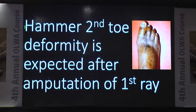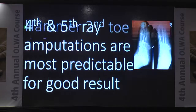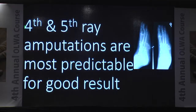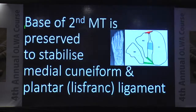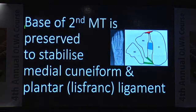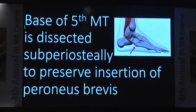Hammer second toe deformity is expected after amputation of the first toe. Fourth and fifth ray amputations are more predictable for good results. The base of the first and second metatarsal should preferably be preserved to avoid disabling Lisfranc complex problems — these are the areas that give insertion to the Lisfranc ligaments. The base of the fifth metatarsal, whenever doing amputation, is dissected subperiosteally, and you try to preserve the insertion of peroneus brevis.